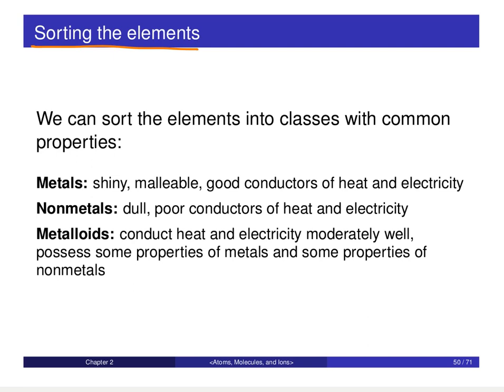The first arrangement is based on the properties of the elements, and there are three general categories of elemental properties. These categories — you may have heard of them before — are metals, nonmetals, and metalloids. Let's take a minute to examine each one of these.